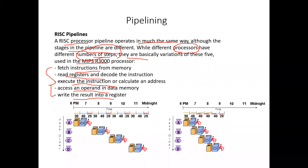Here is a simple example to illustrate pipelining. On one axis we have time, and on the other we have the task order — tasks A, B, C, and D. Without pipelining, each task must wait for the previous one to complete, which takes a lot of time.